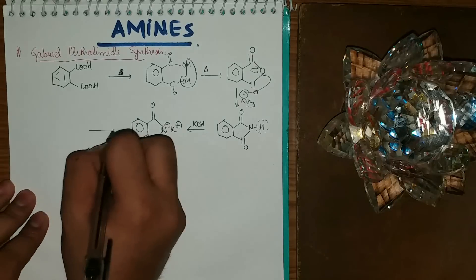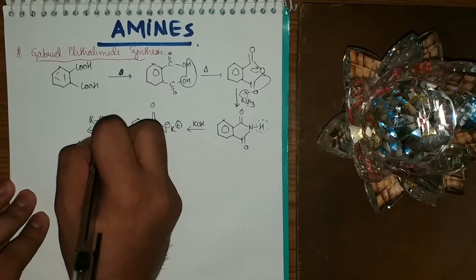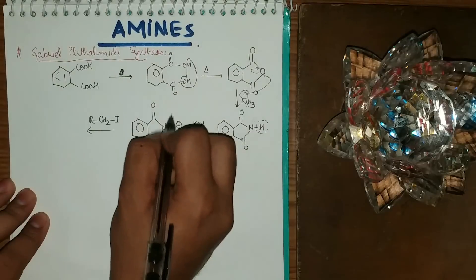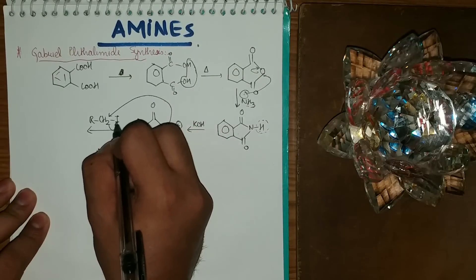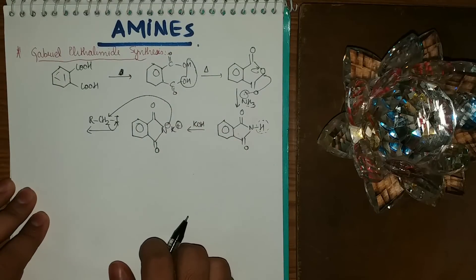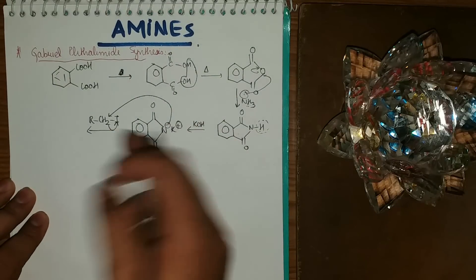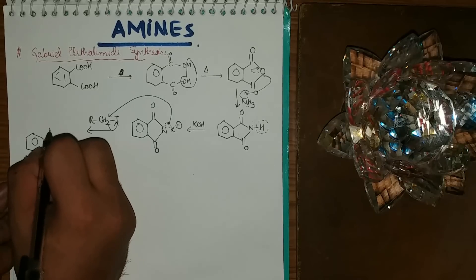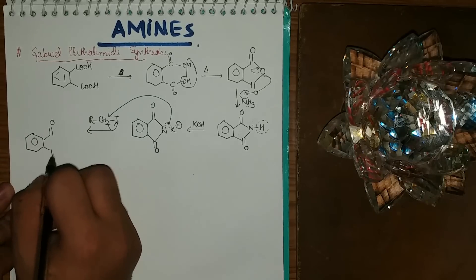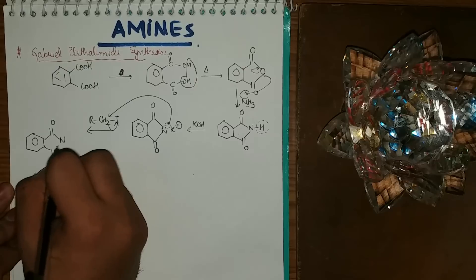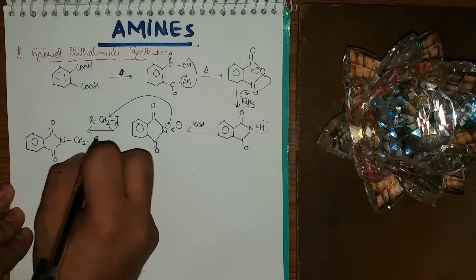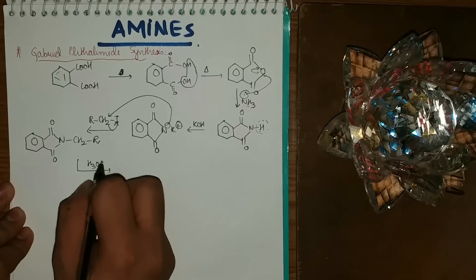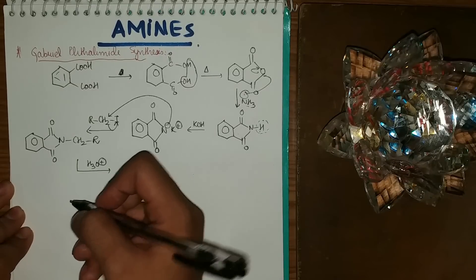Using R-CH2-I as the alkylating agent, the nitrogen nucleophile attacks and displaces I⁻, which is a very good leaving group. I'll be getting benzene-CO-N-CH2R as the product.